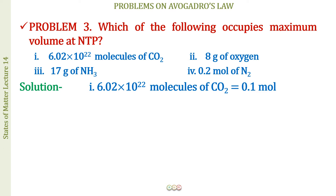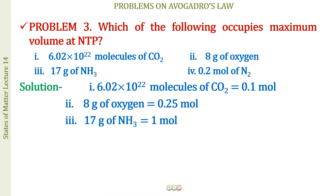Next, 8 g of oxygen divided by the molecular mass of 32 gives 8/32 = 0.25 moles of oxygen. Then 17 g of ammonia, whose molecular mass is also 17, gives 17/17 = 1 mole of ammonia. And 0.2 mole of N₂ is already given in moles.